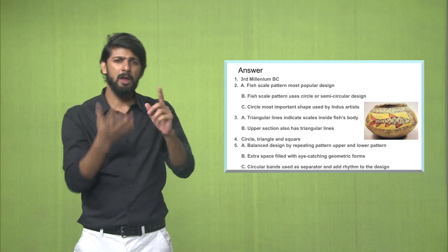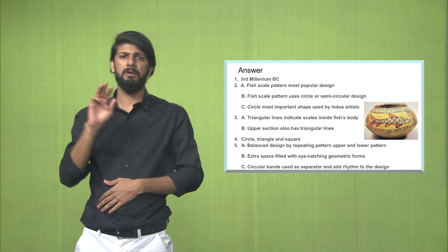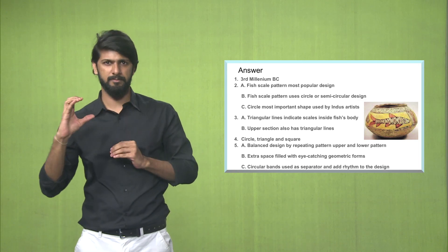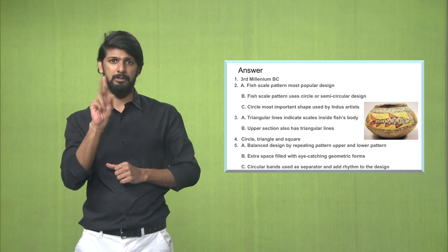Answers. The earliest painted pottery with geometric patterns were found in the third millennium, that is 3000 BC.